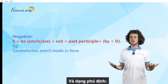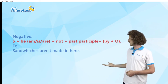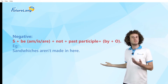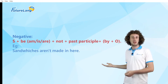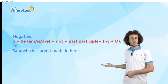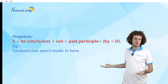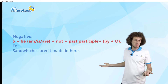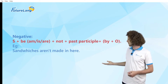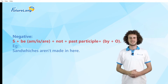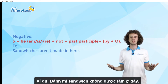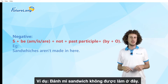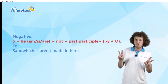And the negative form: subject plus am, is, or are, plus not, plus past participle, plus by object. For example, sandwiches aren't made here — by someone.